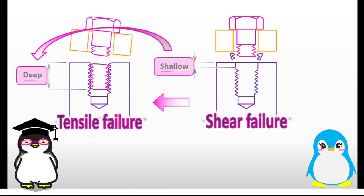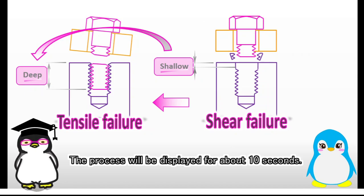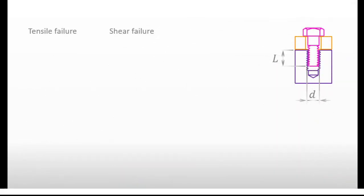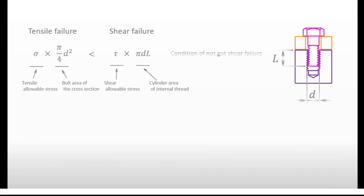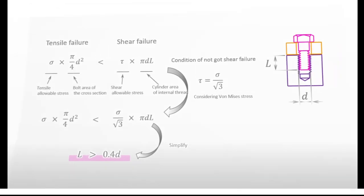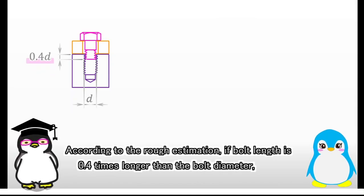That may be a good idea. I'll roughly estimate the length. The process will be displayed for about 10 seconds. Please check it out. According to the rough estimation, if bolt length is 0.4 times longer than the bolt diameter, shear failure will not occur.